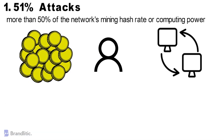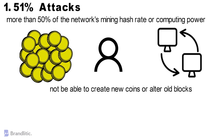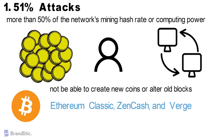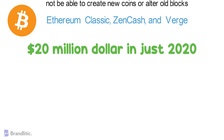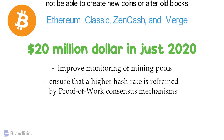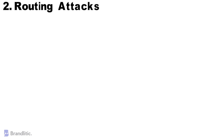Attackers in a 51% attack would also be able to reverse transactions completed while they were in control, meaning they could easily double-spend coins. Notably, an attacker almost certainly would not be able to create new coins or alter old blocks. In 2018, three cryptocurrency platforms — Ethereum Classic, ZenCash, and Verge — experienced 51% attacks. Some major enterprises lost almost 20 million dollars in 2020 alone due to these attacks. To mitigate this, companies should improve monitoring of mining pools and use proof-of-work consensus mechanisms that restrain high hash rate concentration.